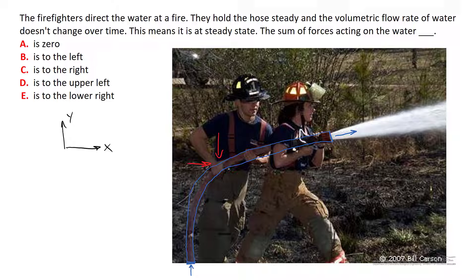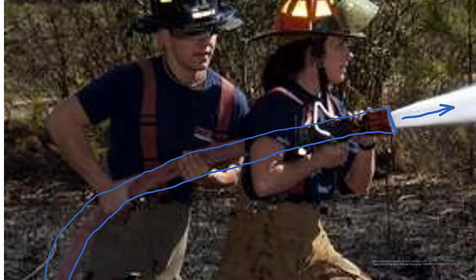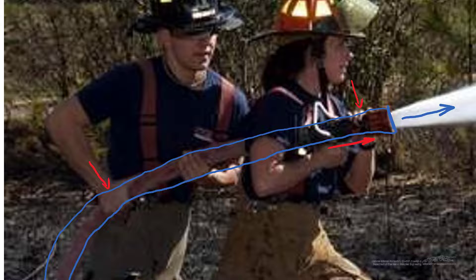So we're reducing the vertical component while increasing the horizontal component of momentum. The net effect, if we sum those two vectors, is that the force acting on the water is to the lower right. And in fact, if we zoom in, we can actually see this — we can see the man's hands pushing downward and forward on the hose. This woman's hand is pushing forward in that direction, and she's also pushing downward on the hose with her left hand. So the net effect of all of these forces is to the lower right.